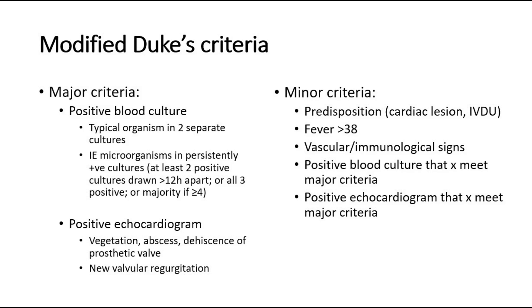This is the modified Duke's criteria, which is very important in diagnosing infective endocarditis. It is divided into major and minor criteria. There are two major criteria: positive blood culture and positive echocardiogram. A positive blood culture means a typical organism is found in two separate cultures, or the organism is persistently positive — at least two positive cultures drawn more than 12 hours apart, or all three cultures positive, or if four or more were taken, the majority is positive.